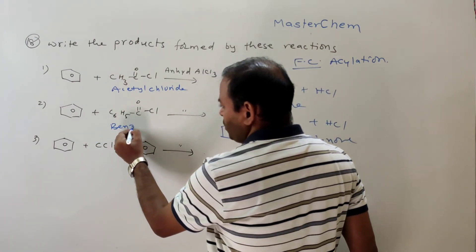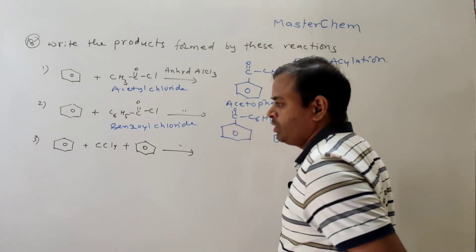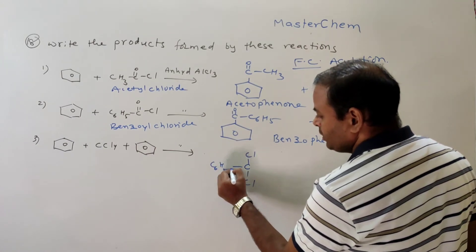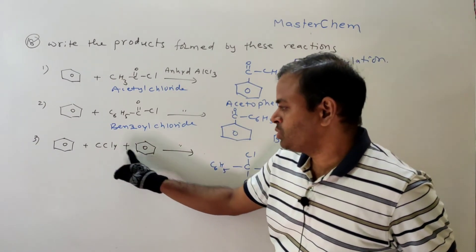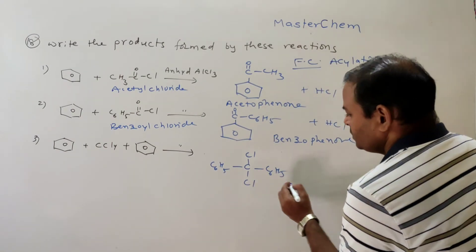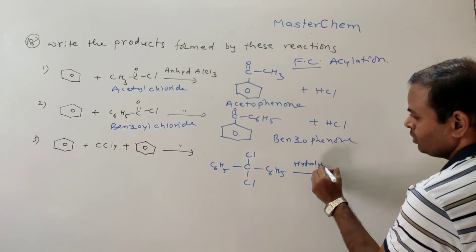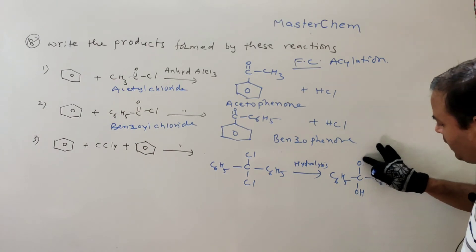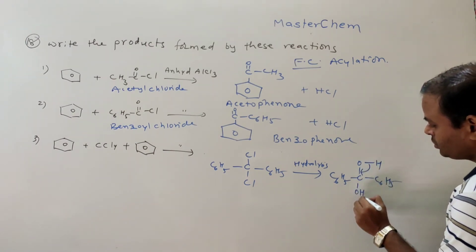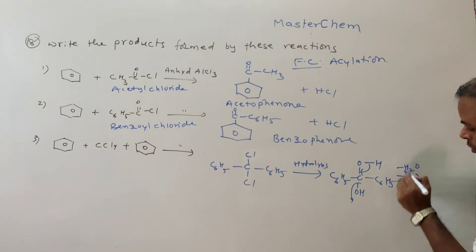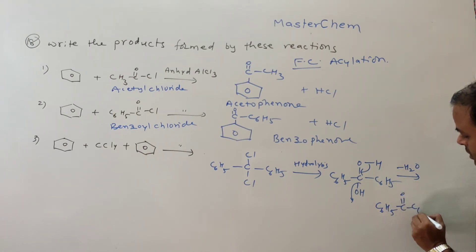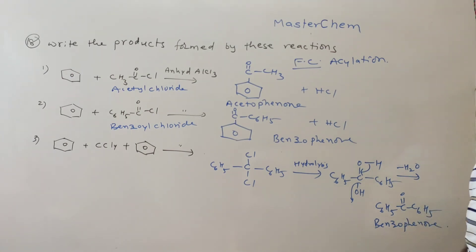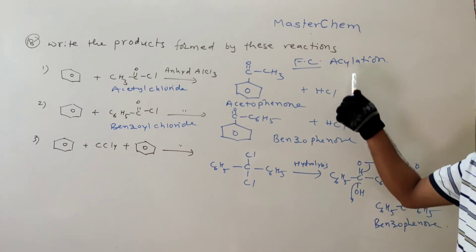Third reaction: two moles of benzene with CCl₄ and Lewis acid. First, CCl₄ reacts to give C₆H₅CCl₂C₆H₅ — two phenyl rings replacing two chlorines. This undergoes hydrolysis to give C₆H₅C(OH)₂C₆H₅ — a diol — which is unstable since two OH groups are on the same carbon. Loss of H₂O gives benzophenone (C₆H₅COC₆H₅). These are all examples of Friedel-Crafts acylation.